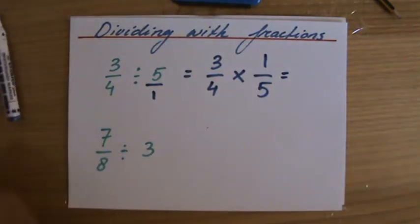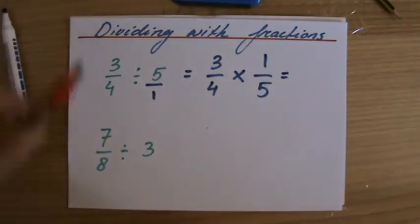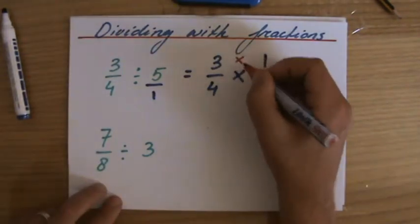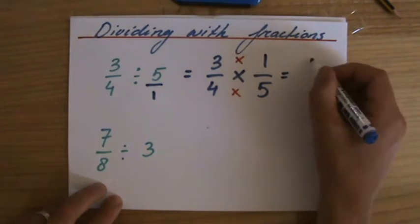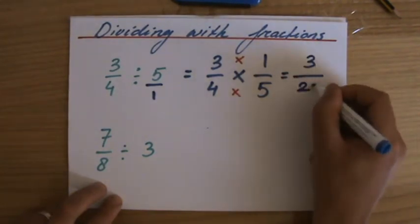and now that is relatively easy because we realize that when you're multiplying fractions, you multiply the numerator with each other and the denominator with each other. 3 times 1 is 3, 4 times 5 is 20.